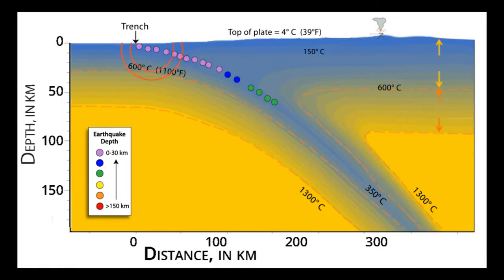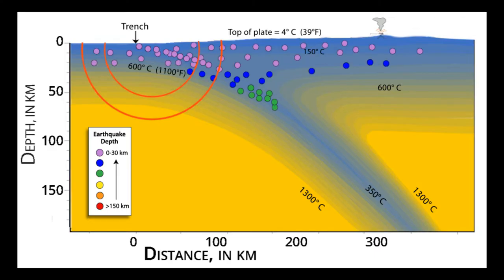Earthquakes, including great megathrust earthquakes, occur on the shallow part of the boundary between the converging plates and within the shallow parts of both plates near that boundary.